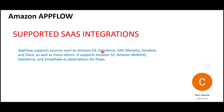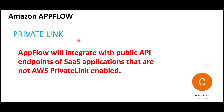The supported SaaS integration platforms - important for the certification - include S3, Salesforce, SAP, Marketo, Zendesk, and Slack. You can integrate these. If you want to integrate with other SaaS products not on this list, you can request customization from AWS, but you will have to pay for it. The best part is you don't need a private link - this may come up in the certification. Even if someone says they don't have private links, you can still use AppFlow.